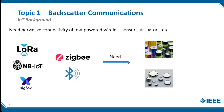All these IoT wireless connectivity solutions are active devices. Even though they are claimed to be low power, they still operate in the range of milliwatts to tens of milliwatts. To power these systems, we normally rely on external power sources or batteries, and batteries come with significant challenges — how to charge them, how to replace them, especially in applications where physical access is very difficult.